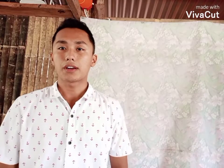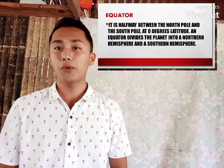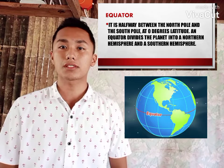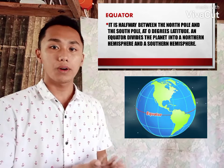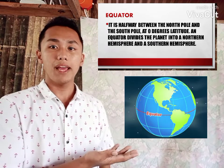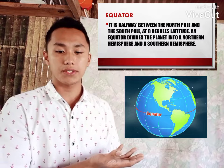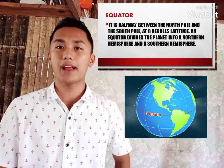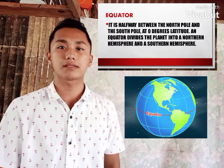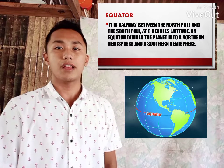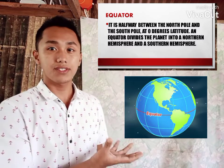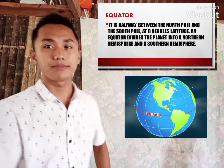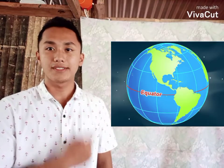Now, what is an equator? An equator is halfway between the north and the south poles. So it divides our planet into two hemispheres — the northern hemisphere and the southern hemisphere. The equator is located at the center plane of the earth, just like in the picture shown.